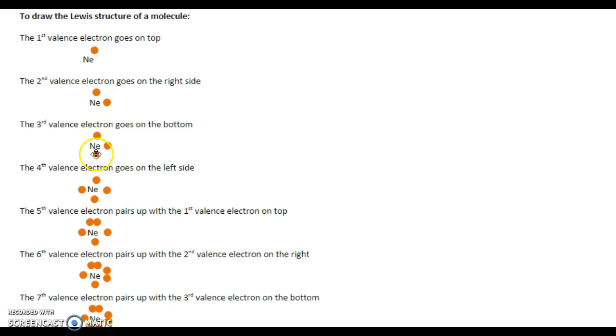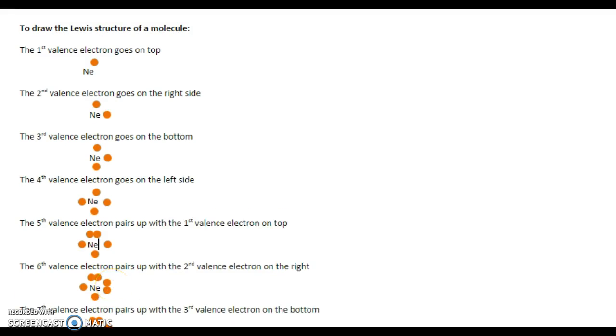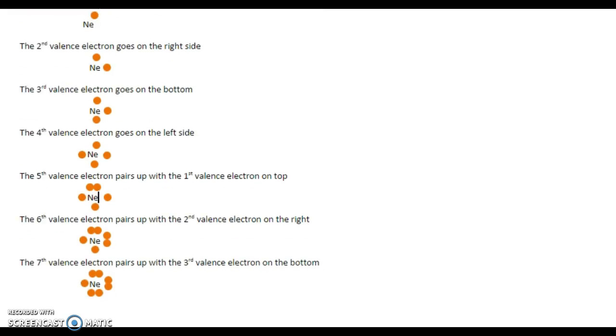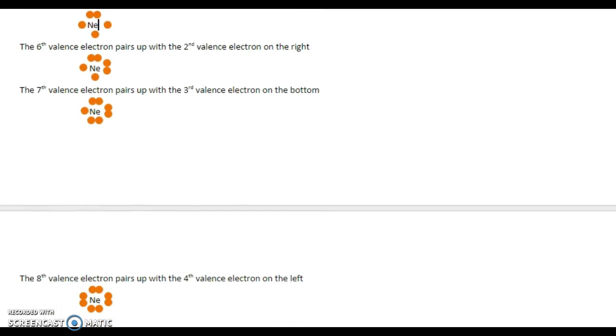1, 2, 3, 4. You have to have four separate ones before they pair up. That's very important. They keep pairing up as we go around. Keep pairing up until we get a full outer shell if you started with a noble gas such as neon.